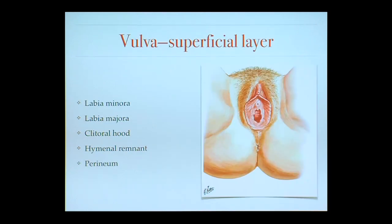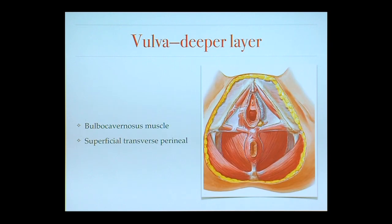Now looking from the perspective of the vulva going deeper: the vagina is here, the urethra is right here, and the muscles most involved with entry to the vagina include the superficial transverse perineal and a deeper muscle behind it. The bulbocavernosus muscle encircles right around the introitus, which is the entry to the vagina.